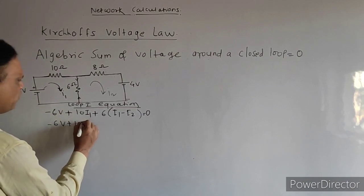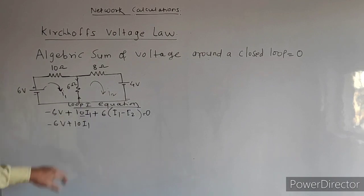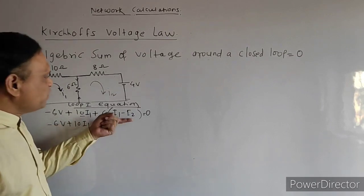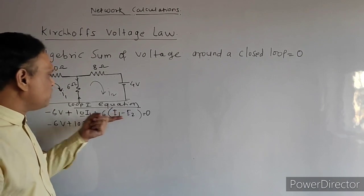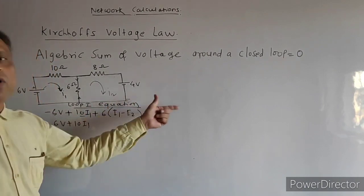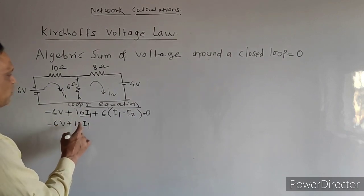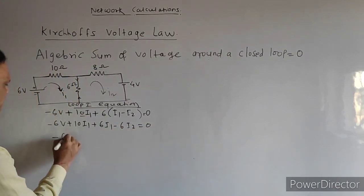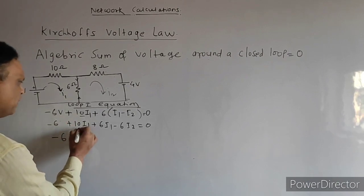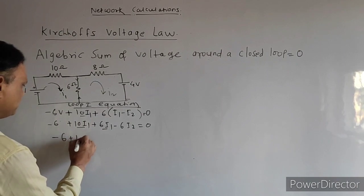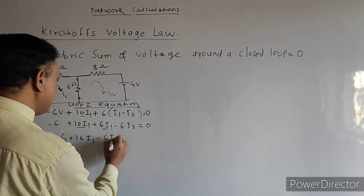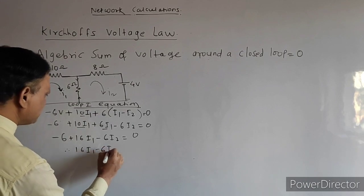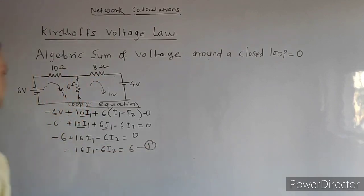Simplifying: minus 6 plus 10 I1 plus 6 I1 minus 6 I2 equals zero, which gives 16 I1 minus 6 I2 equals 6. This is equation number 1. Now for loop 2: current I2 is entering from the positive side, so we write plus 4. The remaining terms are positive. This gives 4 plus 6(I2 minus I1) plus 8 I2 equals zero, simplifying to minus 6 I1 plus 14 I2 equals minus 4. This is equation number 2.